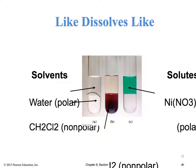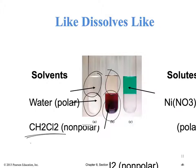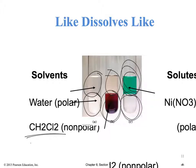For example, here we have water that is polar and dichloromethane which is non-polar — they won't mix. Here we have water and iodine, which is non-polar, so it won't dissolve. And here we have nickel nitrate, which is polar, with dichloromethane — they won't mix because they don't have similar polarities.